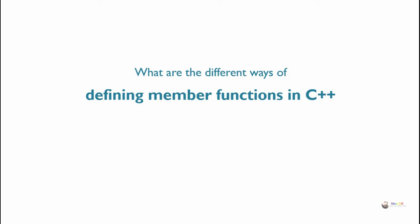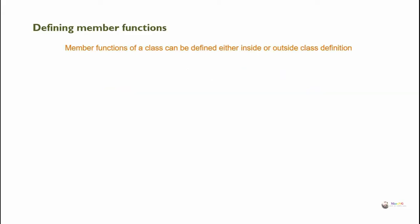What are the different ways of defining member functions in C++? Member functions of a class can be defined either inside or outside the class definition. In both cases the function body remains the same; only the function prototype will be different.